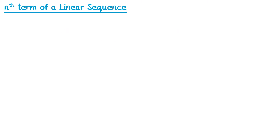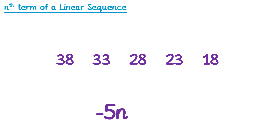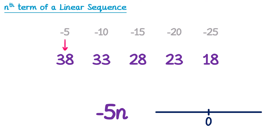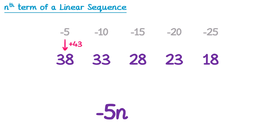Let's try another example. To get from one term to the next, we subtract 5, which means the nth term will include negative 5n. We write the negative 5 times table: negative 5, negative 10, negative 15, negative 20, negative 25. To get from negative 5 to 38, think of a number line — from negative 5 to 0 is add 5, and from 0 to 38 is add 38, so to get there in one jump we add 43. So it's negative 5n plus 43.